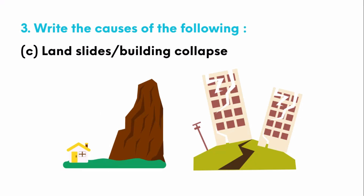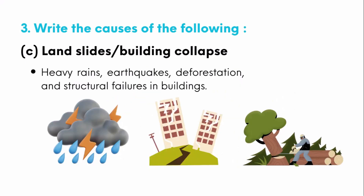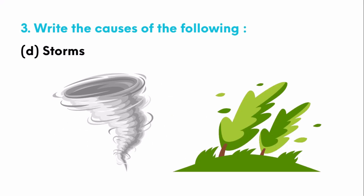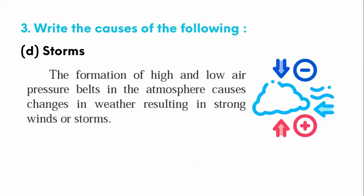Next, landslides or building collapse — what are the causes? Heavy rains, earthquakes, deforestation, and structural failure in buildings are the causes for landslides or building collapse. The causes for storms are the formation of high and low air pressure buildup in the atmosphere, which causes changes in weather resulting in strong winds or storms.